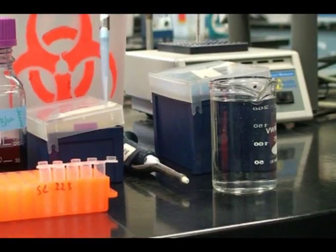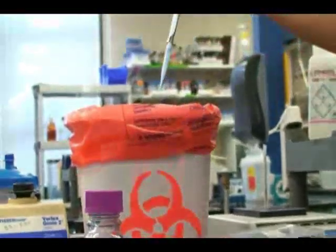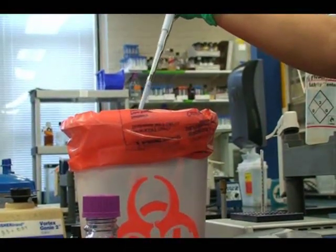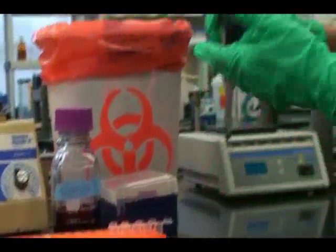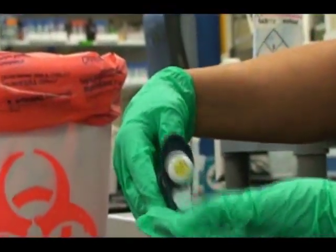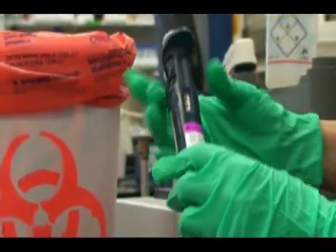After filling all the tubes with 900 microliters of dilutant, throw the pipette tip into the white semi-sharps biohazard bin on the lab bench. Next, take a 200 microliter pipette man and set it to 100 microliters.